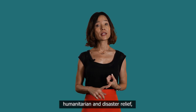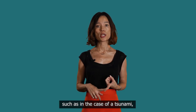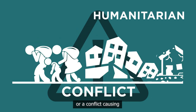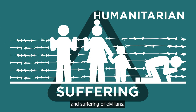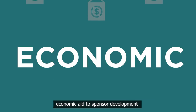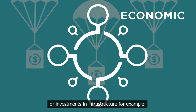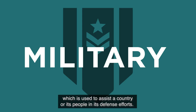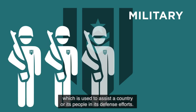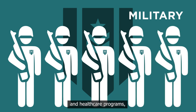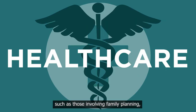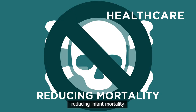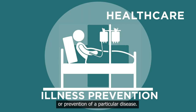There are several types of aid, including humanitarian and disaster relief — such as in the case of a tsunami, an earthquake, or a conflict causing the displacement and suffering of civilians — economic aid to sponsor development or investments in infrastructure, military support which is used to assist a country or its people in its defense efforts, and healthcare programs such as those involving family planning, reducing infant mortality, or prevention of a particular disease.